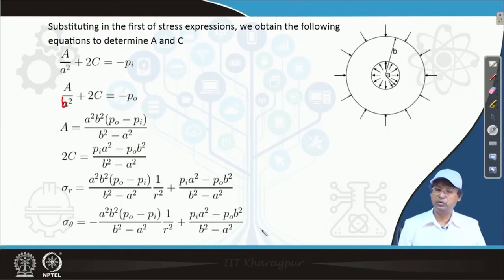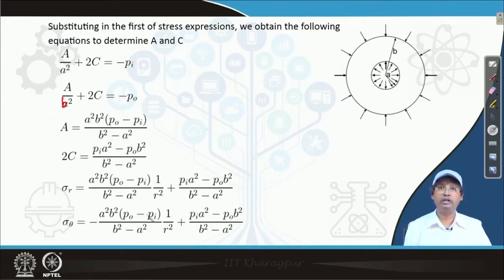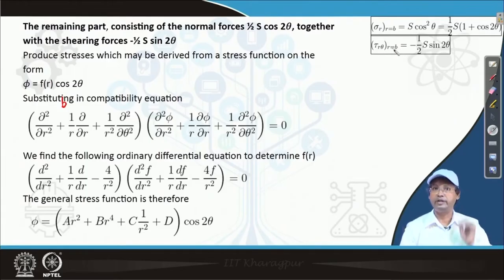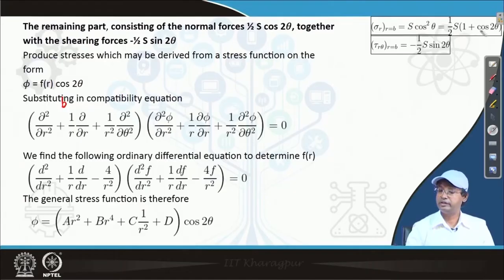For the axisymmetric case the stress distribution depends only on r and not on theta. Now we come to the remaining part: sigma_r has a term (S/2)cos2θ and tau_r_theta has a term −(S/2)sin2θ from the boundary condition beyond circle B. These two theta-dependent terms are the remaining parts we need to consider in order to find the stresses around the hole.